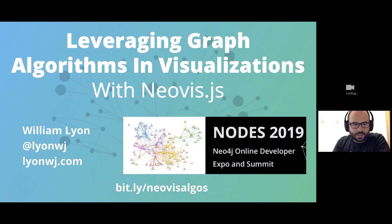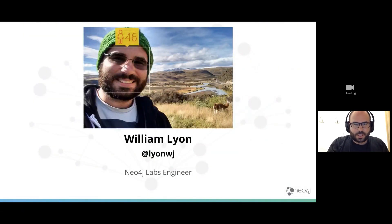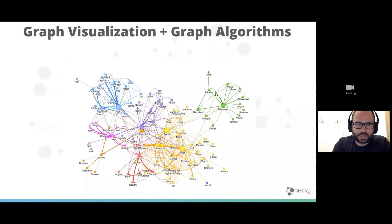So my name's Will. The slides for this talk are available at bit.ly slash NeoViz algos, and my Twitter and web URL are on there as well. So feel free to ping me if you have any questions. I work on the Neo4j Labs team as a developer. If you saw the keynote earlier today, Michael talked about Neo4j Labs, these are sort of tooling extensions around the database. And that's exactly what I want to talk about today in the context of combining graph visualization and graph algorithms.